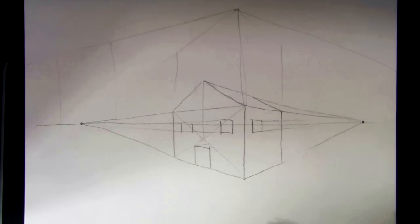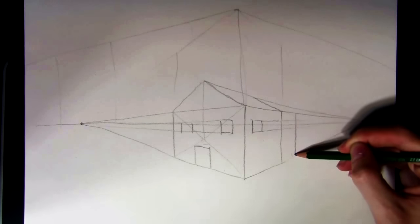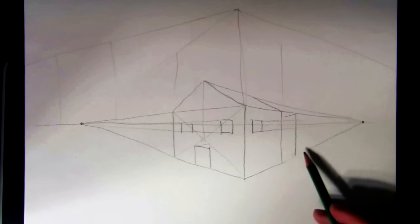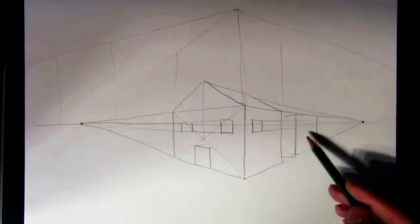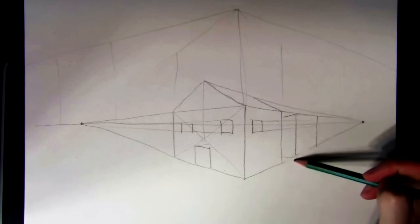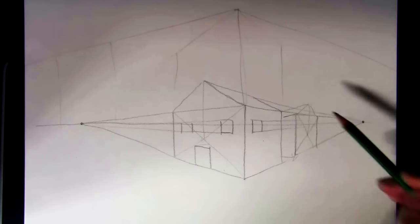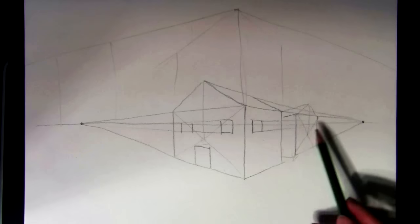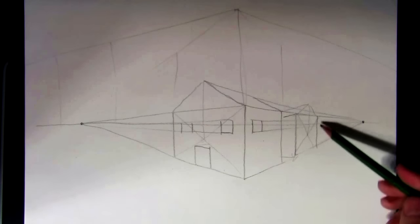And just like I did a one-point perspective, you can make another house next to it and just vanish the points off. And there's your neighbor's house or whatever. You draw up the roof. That's facing a different way. But you get the idea. You can do a whole bunch of different things with this.